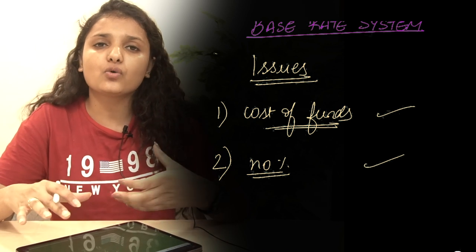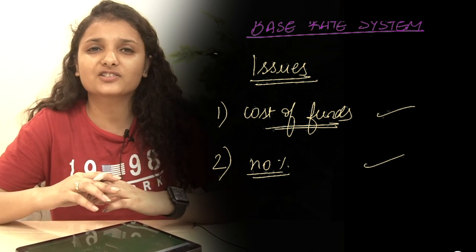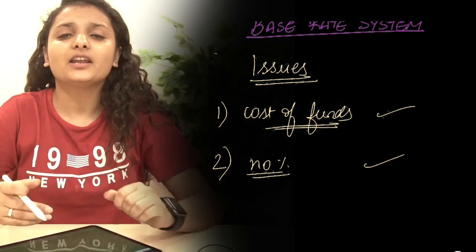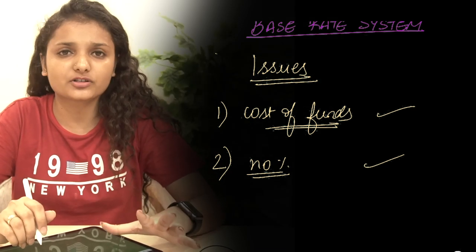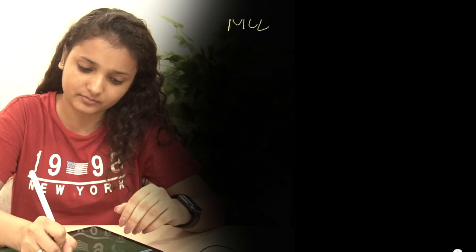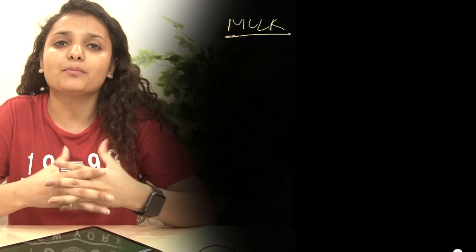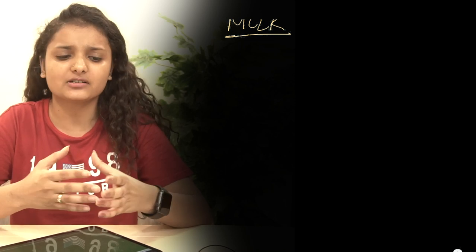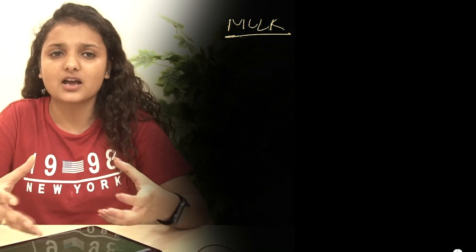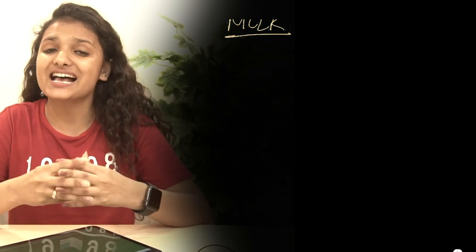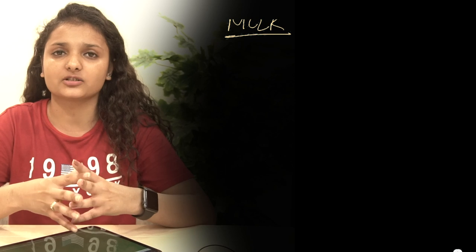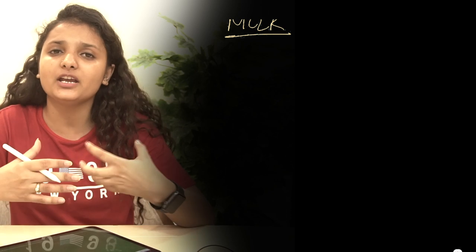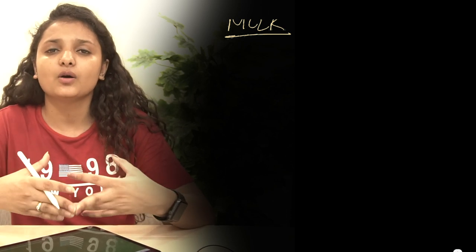There was again a need to switch to a better form of interest rate system, and MCLR was introduced in April 2016. MCLR is the Marginal Cost Based Lending Rate. Unlike the base rate system where overall or any kind of cost of funds was used, under MCLR as the name suggests, only the marginal cost of funds is used — meaning only the new cost of funds currently being incurred by the bank is included in the MCLR calculation.